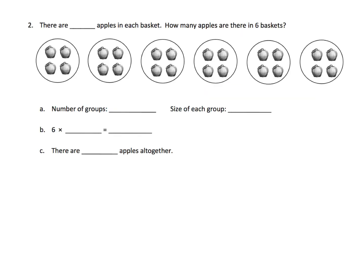In this problem, it says there are blank apples in each basket. We're looking at the baskets — there are 6 baskets, and I can see that there are 4 apples in each basket. Down here it says the number of groups — how many groups are there, meaning how many baskets? There are 6 groups, and there are 4 in each group.